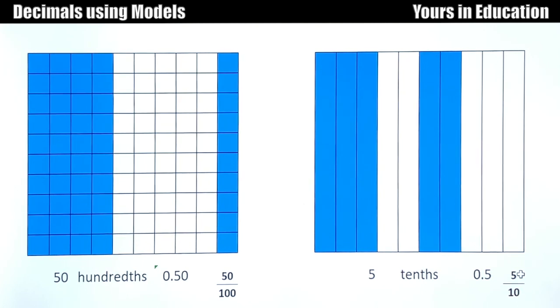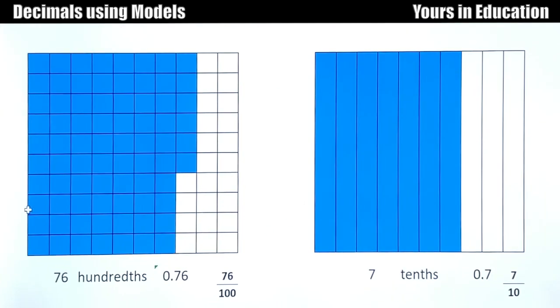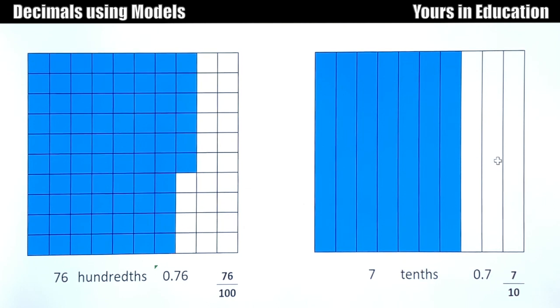On the left model we have now 76 hundredths: 10, 20, 30, 40, 50, 60, 70, 71, 72, 73, 74, 75, 76. And also I know that this is 6 because 6 plus 4 equals 10, so visually it's easy for me to know that this is 6. But if you cannot see it yet, then just count one by one. And on the right side I have 7 out of 10.